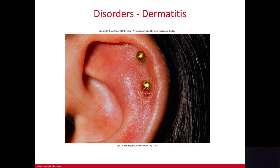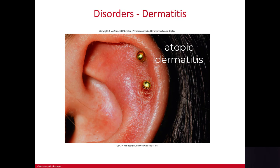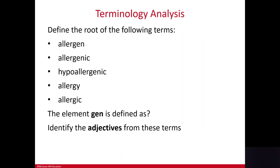Dermatitis literally means inflammation of the skin — 'derm' means skin and the suffix 'itis' means inflammation. Atopic dermatitis refers to an inflammation of the skin caused by an allergic reaction. Let's look at some of these terms, as the textbook goes into some explanations here.